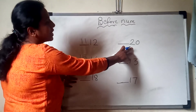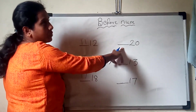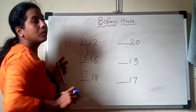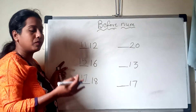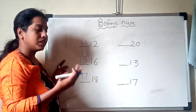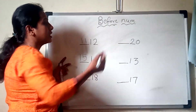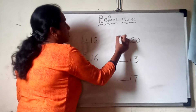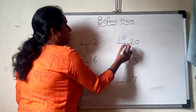Now here 20 — which number will come before? Count: 11, 12, 13, 14, 15, 16, 17, 18, 19. Yes, so 19 will come before 20.